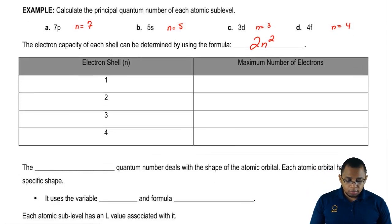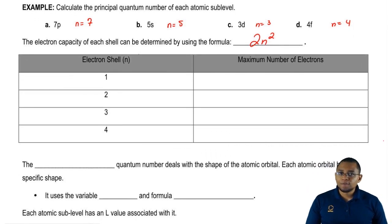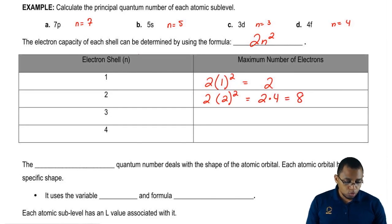If we're in the first shell, we can figure out how many electrons the first shell holds by using this formula. It would just be 2 times 1 squared. So that would just be 2. If we're in the second shell, it would be 2 times 2 squared. So that would be 2 times 4, which would be 8.